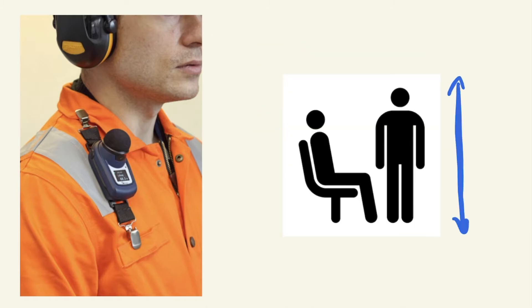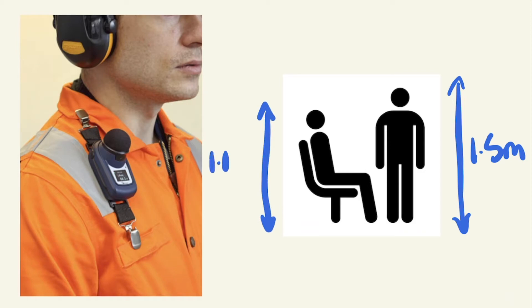If the worker is in a standing position, the microphone should be 1.5 meters above the floor. If they are in a seated position, it should be 1.1 meters above the floor. Finally, shielding between the microphone and the noise source should be avoided.